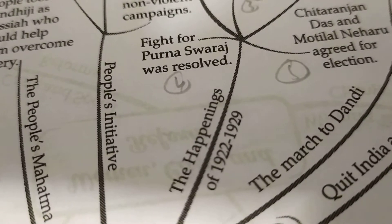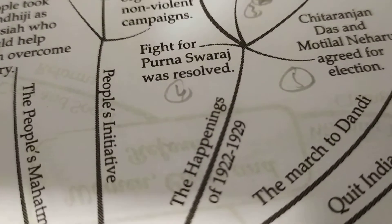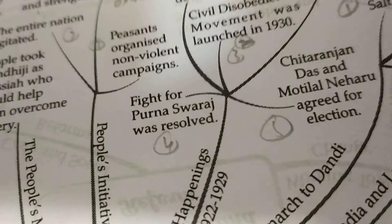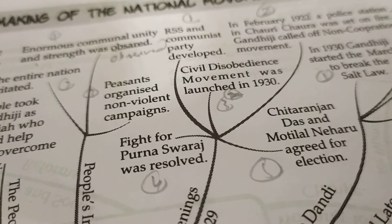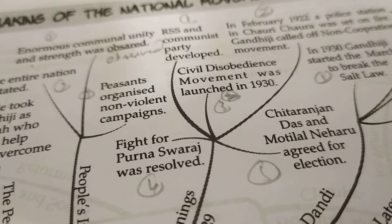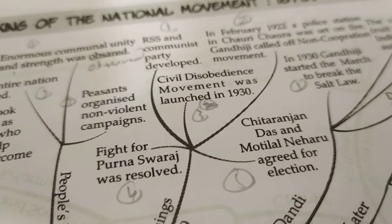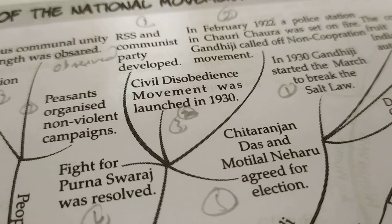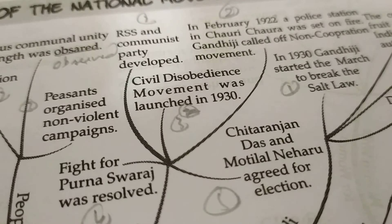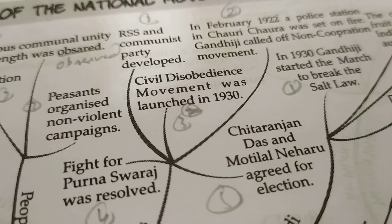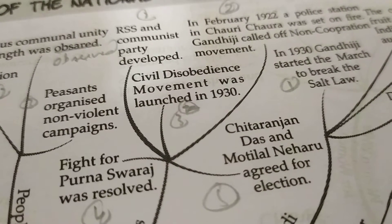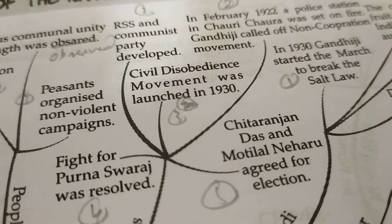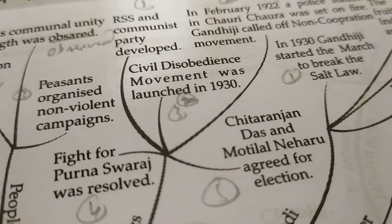Then, the happenings of 1922. Gandhi began to fight for Purna Swaraj, and the RSS and the Communist Party developed. In February 1922, a police station in Chauri Chaura was set on fire. Gandhiji was very much pained by this violence, because it was a non-violence movement, and he immediately called off the Non-Cooperation Movement.